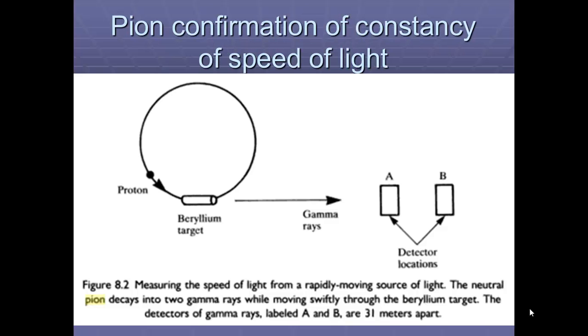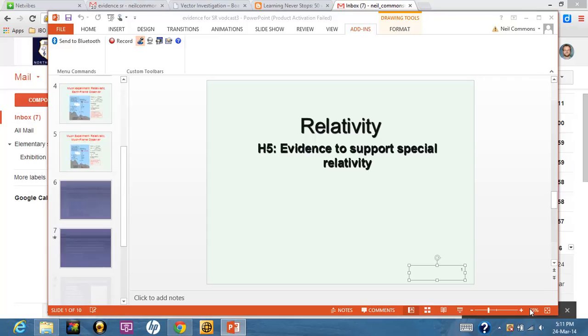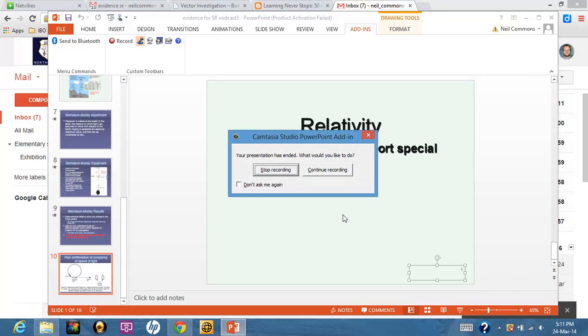So there's another bit of evidence towards special relativity. And finally, the pion confirmation of constant C is the speed of light. A pion is another interesting particle, and what it does, it decays into two gamma rays. And what you can do is, by looking at the two gamma rays, we can compare the speed of the gamma rays being emitted, and they, again, seem to be exactly the same. So there's some evidence towards special relativity.